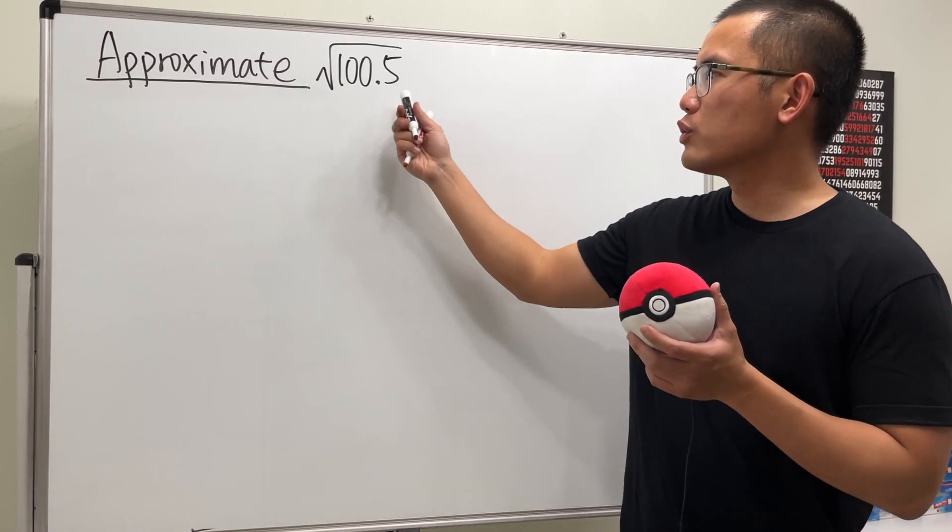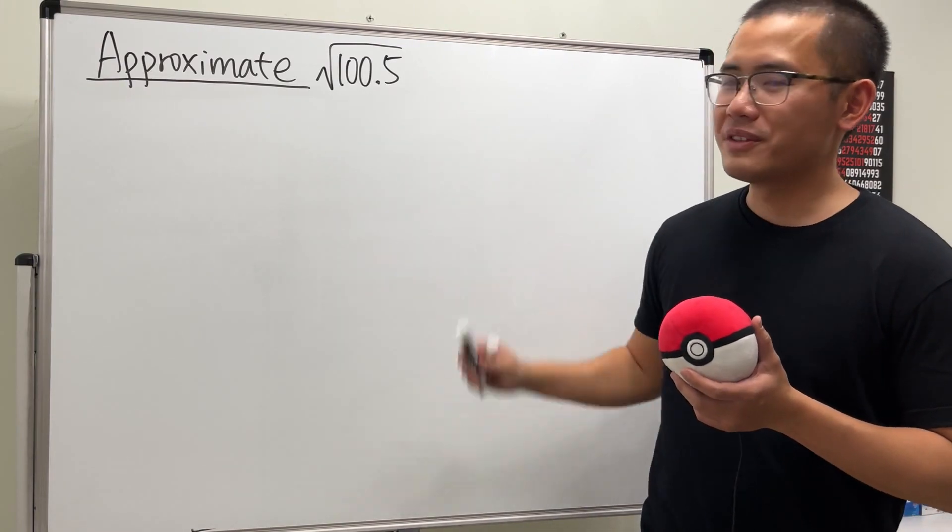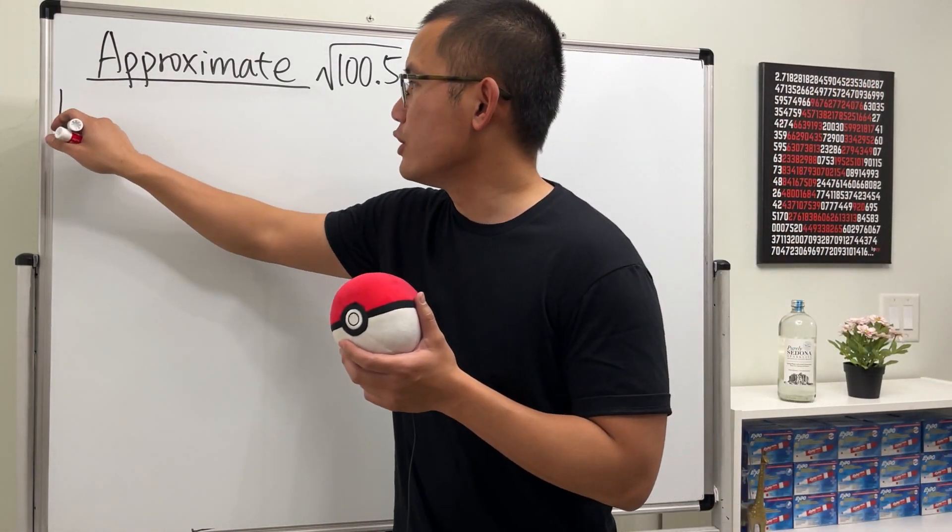Alright, we are going to approximate square root of 100.5. Here, let's use the linearization first.